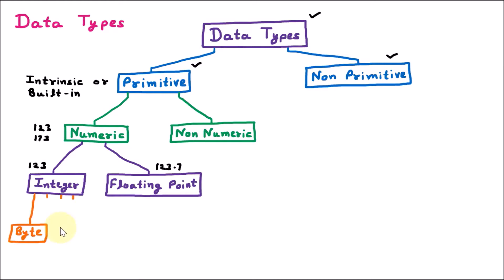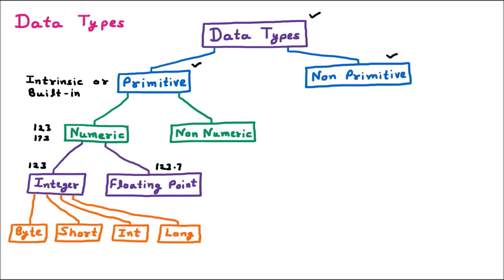Integer data types are further classified into four types: byte, short, int, and long. When dealing with integers, depending on the size you need, you choose accordingly. Byte is one byte, short is two bytes, int is four bytes, and long is eight bytes. So depending on the size of the integer value you want to store, you choose byte, short, int, or long.